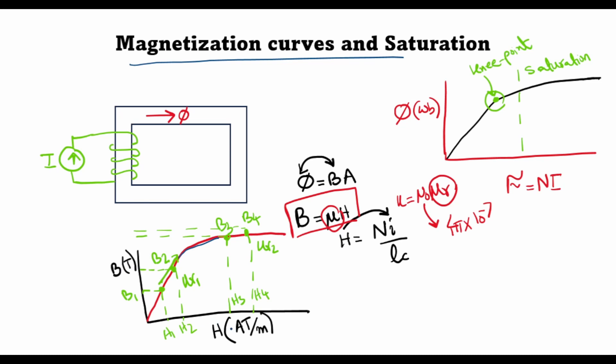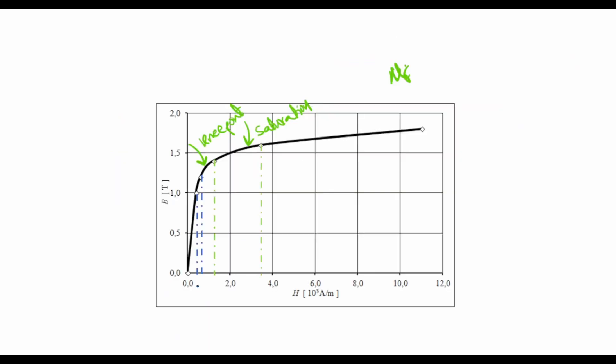We saw that the B-H curve exhibits a phenomenon known as saturation, and this saturation occurs because the relative permeability is not constant as a function of the magnetic field intensity. We also saw this with a typical B-H curve of steel.